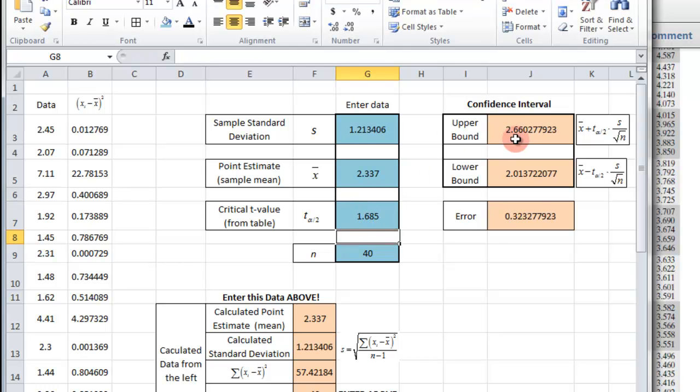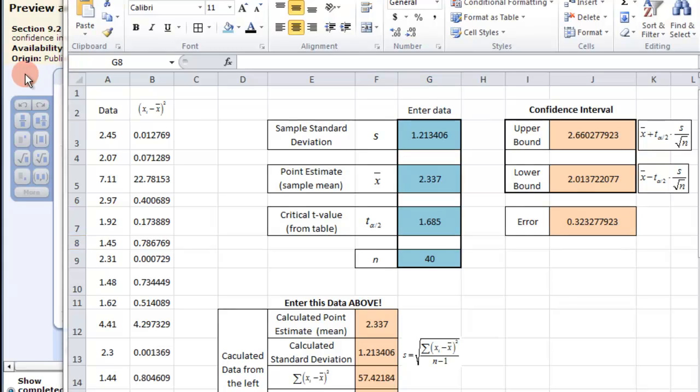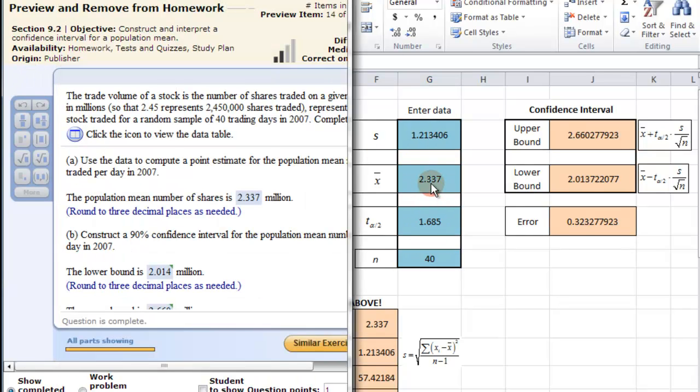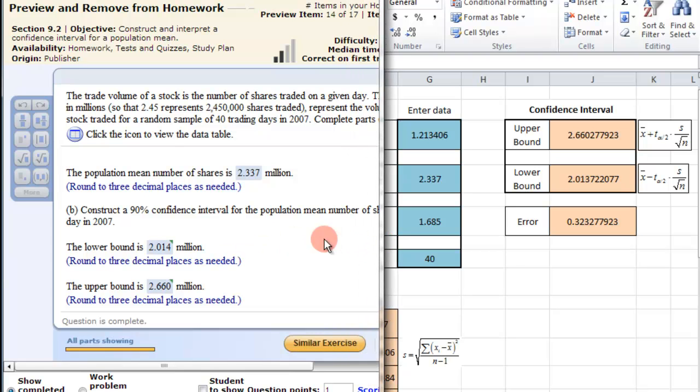So 90% would be a 0.05 in each tail. That's that column, 0.05. And 39 would be right there, so 1.685. Go back here, 1.685. And then these should be our confidence intervals, the upper and lower bound. Let's just check it out. So it's in millions. First off the mean is right, 2.337 million. Three decimal places. Again you can have this round off to whatever you want. The lower bound of the 90% confidence interval of the population mean is 2.014. And then the upper bound is 2.660.